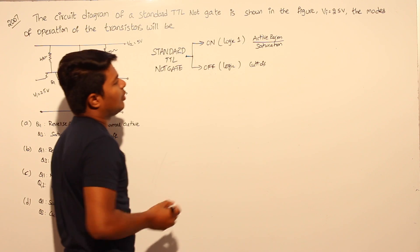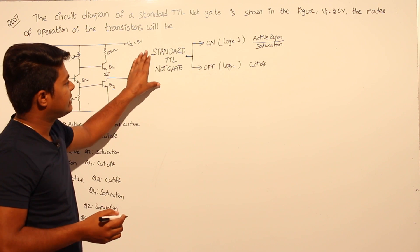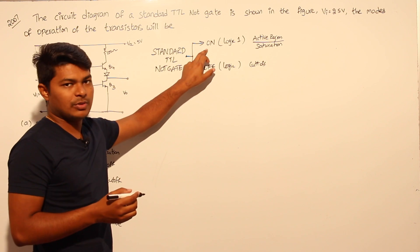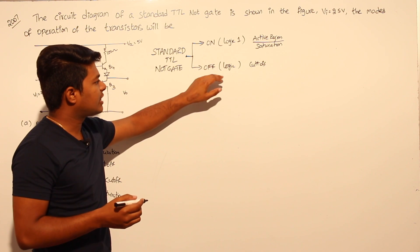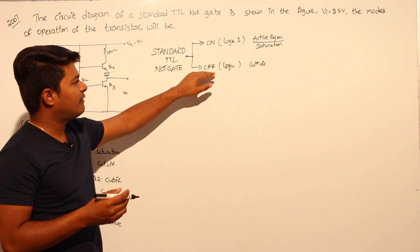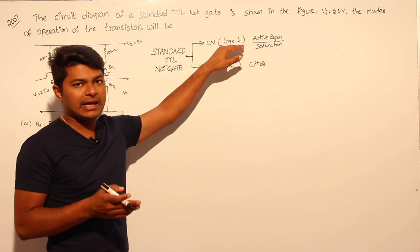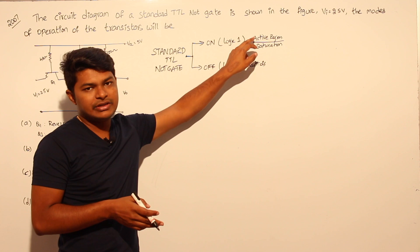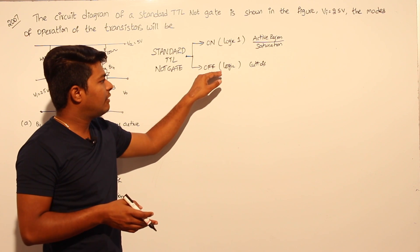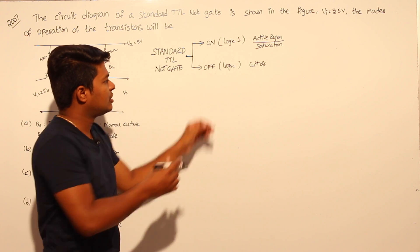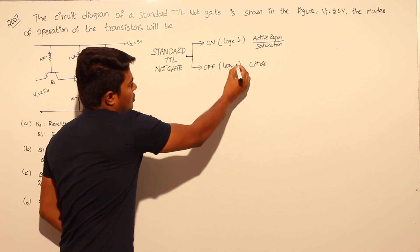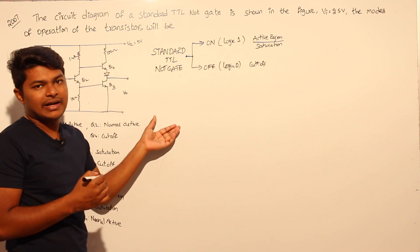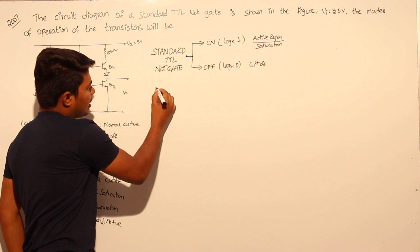This is an important point to keep in mind: the standard TTL NOT gate has two possibilities — on and off. When applying logic 1, the transistor is in the active or saturation region. When applying logic 0, it is in the cutoff region.